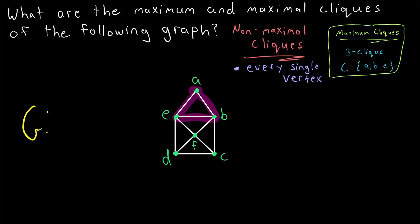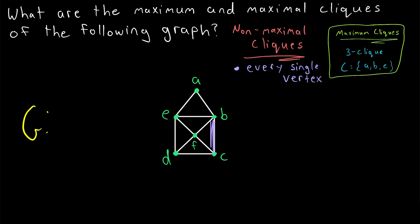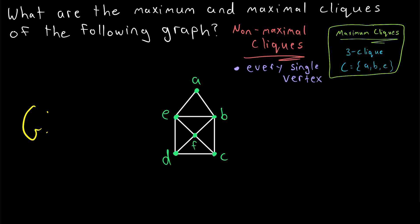Remember that a triangle is also a clique — it's a complete graph with three vertices. So if an edge lies on a triangle, then that edge's two end vertices make up a non-maximal clique, because we could include the other vertex in the triangle to get a larger clique with three vertices. An edge and its vertices make up a clique, a complete graph on two vertices. If an edge lies on a triangle, then the edge and its end vertices do not make up a maximal clique, because we could extend the clique by including the other vertex in the triangle. As it turns out, in this graph, every single edge lies on at least one triangle. Thus, in this graph, every single pair of adjacent vertices also make up a non-maximal clique.